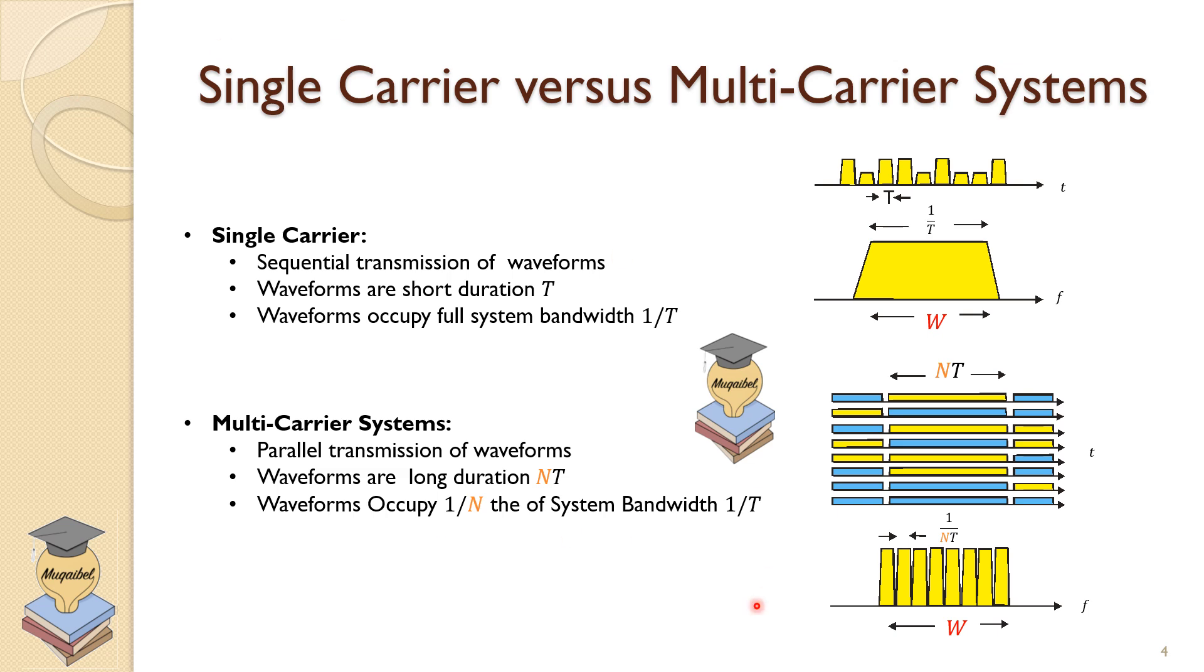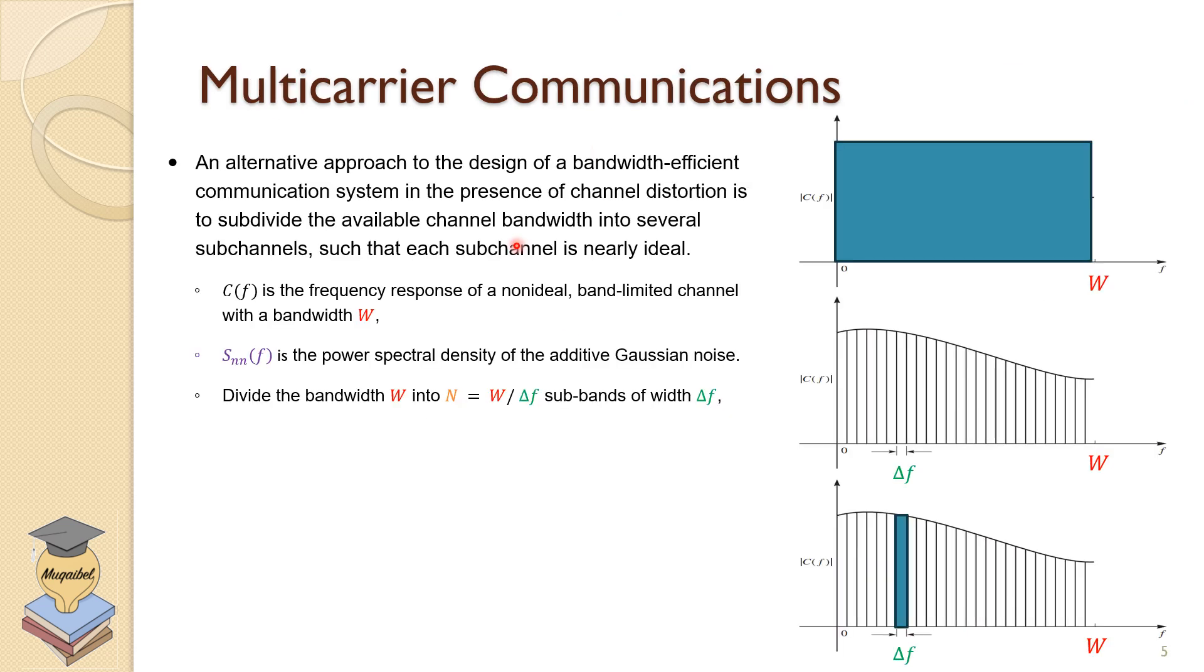So the logical question now would be, why multi-carrier system? Usually, the true channel that we deal with is non-ideal. This is an example of an ideal channel where we have the bandwidth equal to W, and we have flat response, no frequency dependence. This is not truly the case. What we have in real life, we have variation across the spectrum. And I'm just showing the magnitude spectrum of the channel.